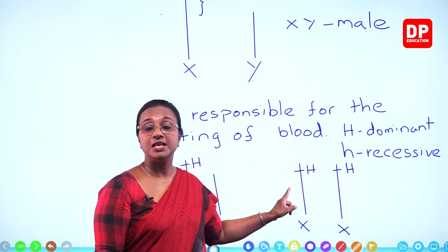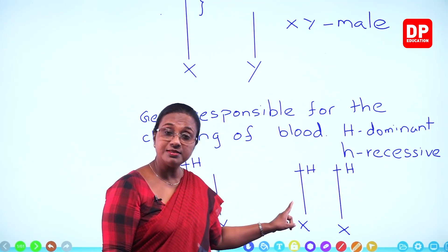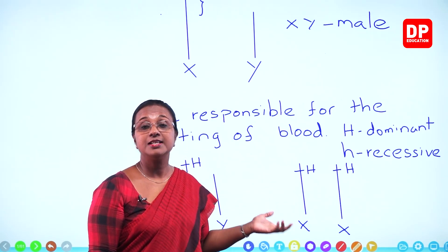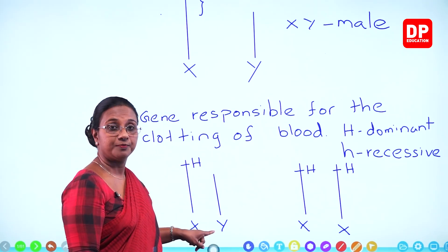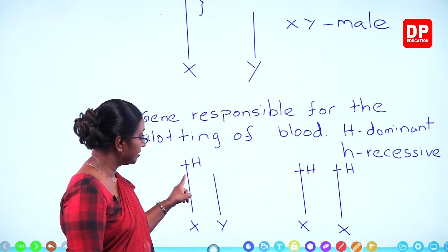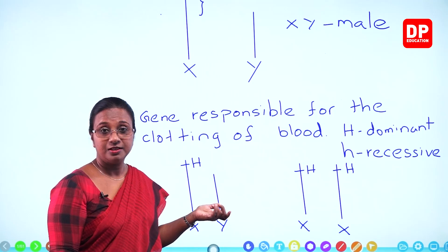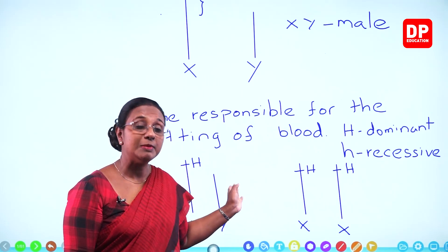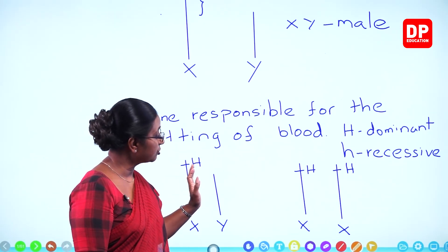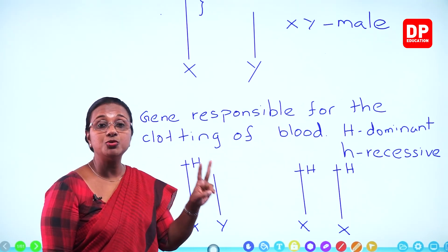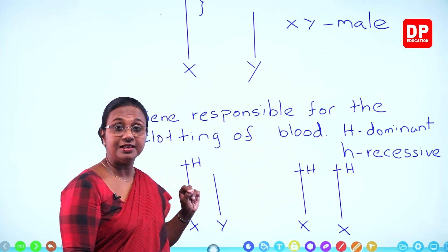In females, the gene expression can vary: both dominant, both recessive, or heterozygous — dominant and recessive together. But in males, since only the X chromosome carries the gene and Y does not, it can be either the dominant or recessive character. This means males have more chances of getting the disorder. Having two X chromosomes is an advantage for females, as those genes are absent in the Y chromosome.